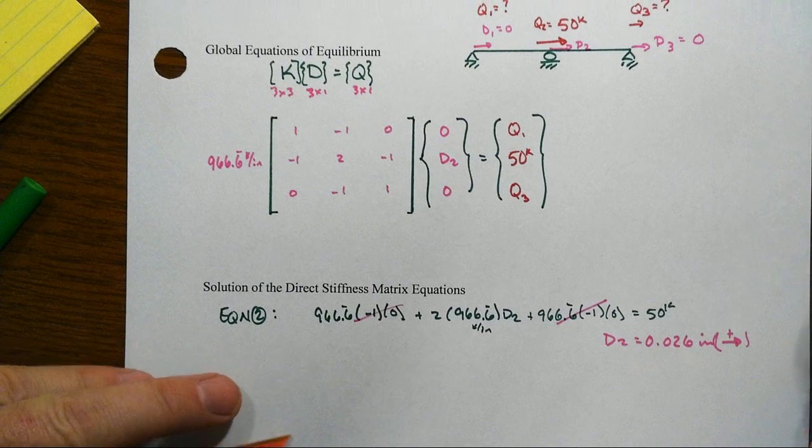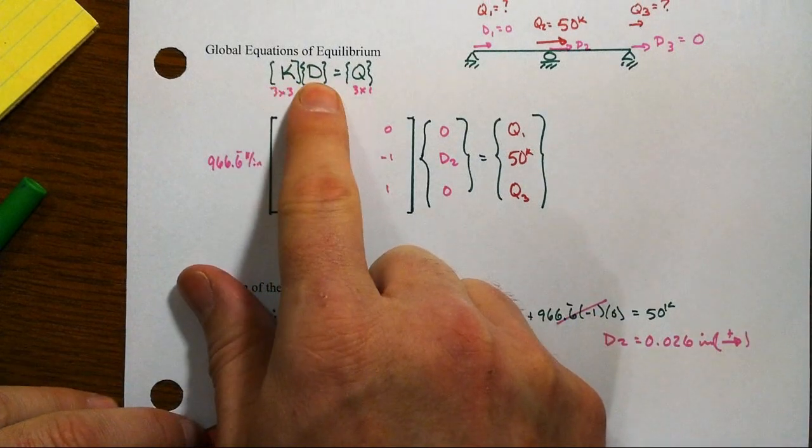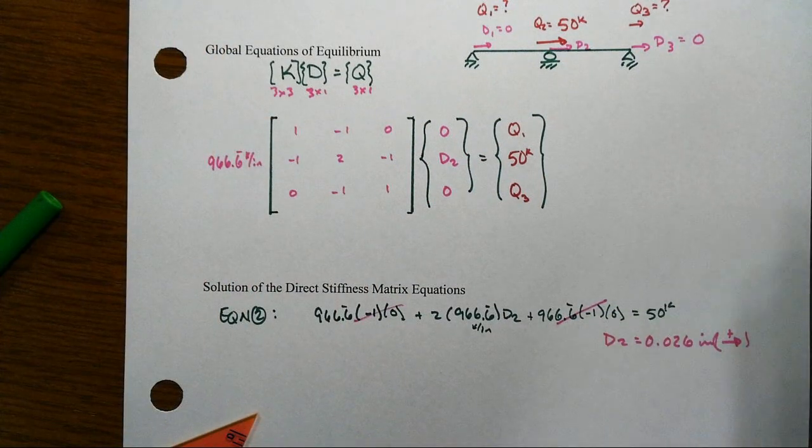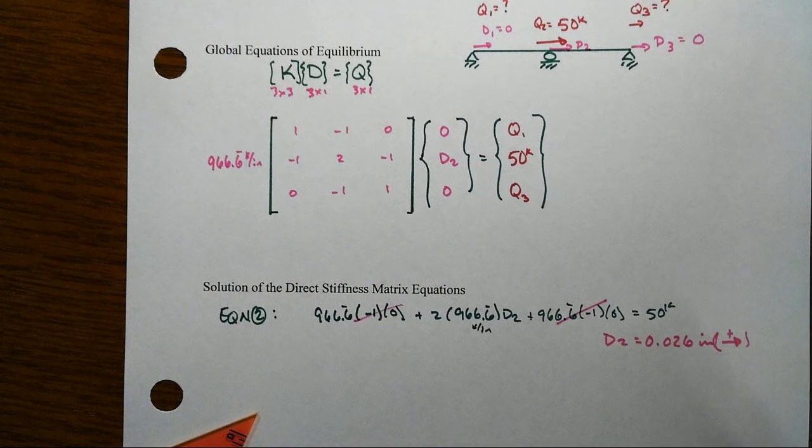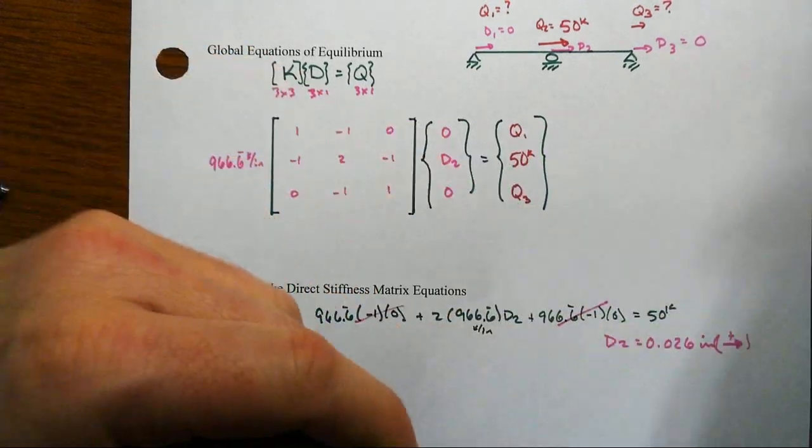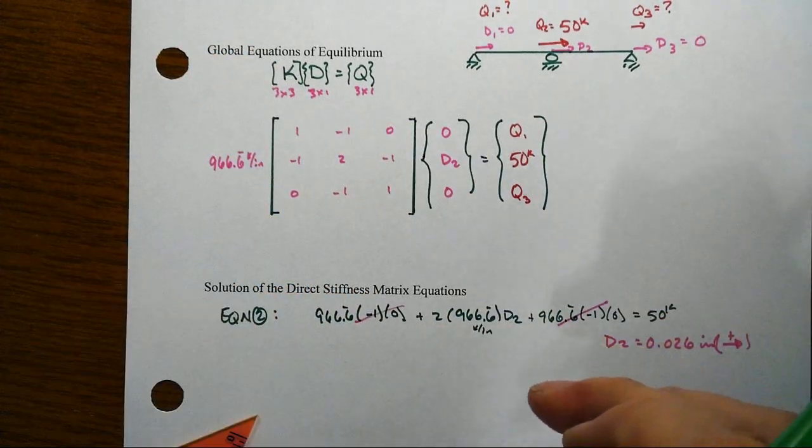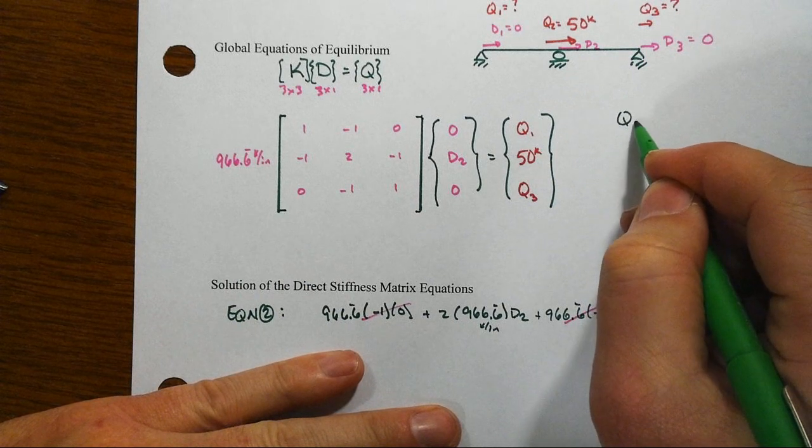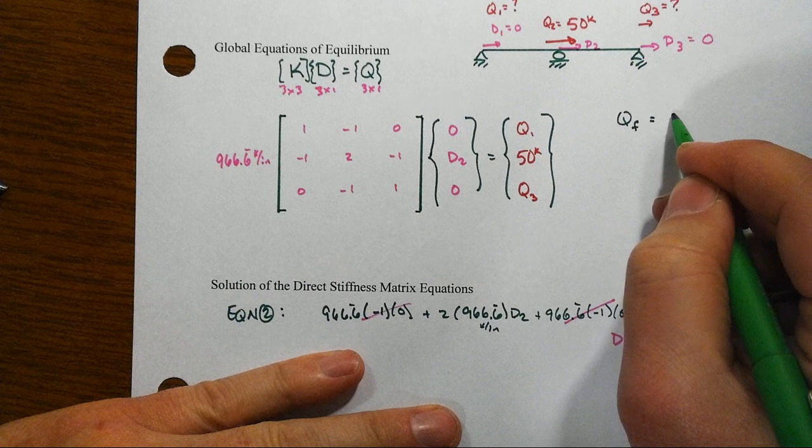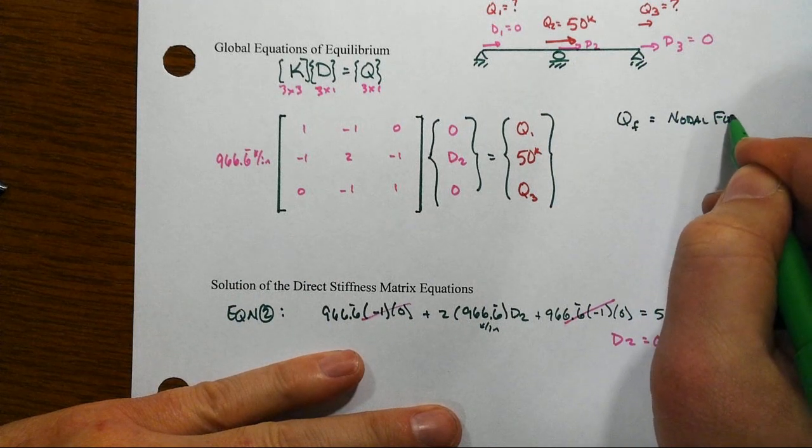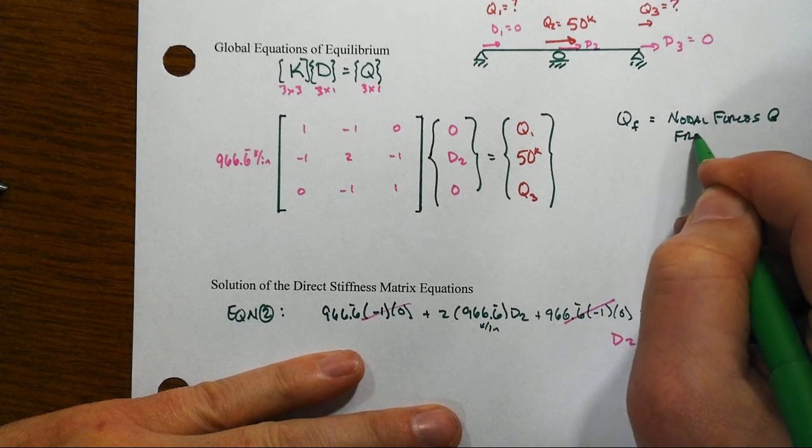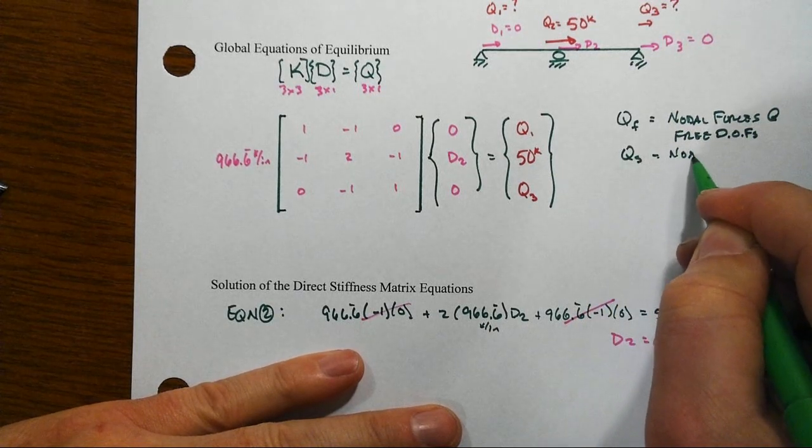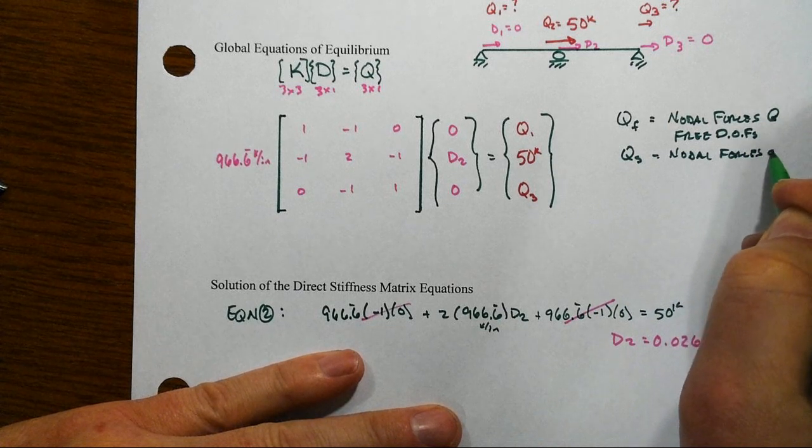Generically, what we're really going to do is in some sense invert the stiffness matrix, except we need to be a little more careful in how we think about all that. Some of these degrees of freedom were free and some of them were not—they were restrained, they were our supports. Let Qf represent the nodal forces at the free degrees of freedom.